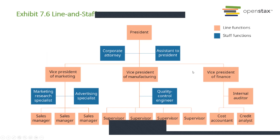These charts — line function charts and staff function charts — differentiate by color coding. Take a look at that detail within your textbook.